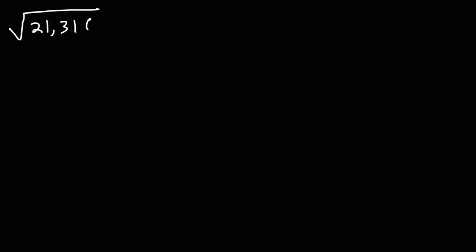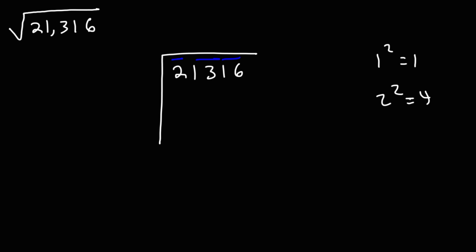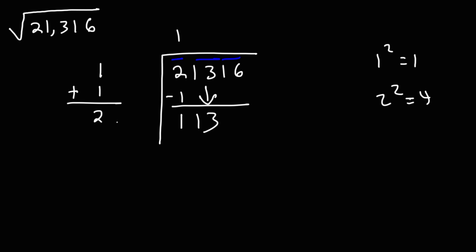Now let's find the square root of a 5-digit number: 21,316. The first thing we're going to do is write pairs of 2s starting from the left. We're going to focus on the square root of 2. We know that 1 squared is 1 and 2 squared is 4. So the perfect square less than 2 is 1. 1 times 1 gives us 1. 2 minus 1 is 1, and then we bring down the next pair of numbers, 13. On the left, we add 1 to 1, giving us 2, and draw a box. So 20-something times something equals or is just under 113.